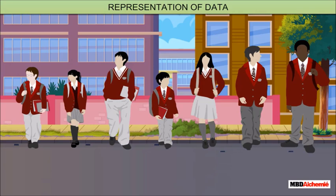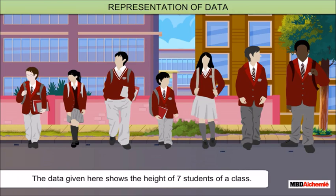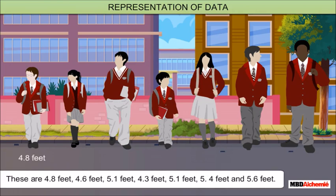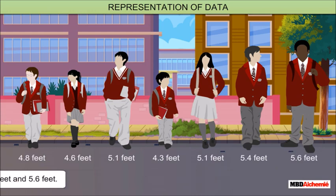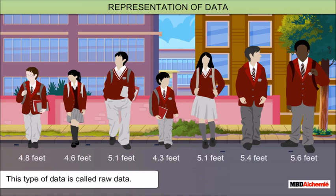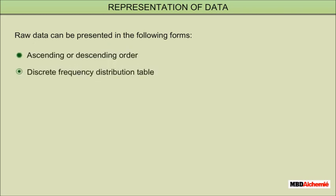Representation of data: the data given here shows the height of seven students of a class — 4.8 feet, 4.6 feet, 5.1 feet, 4.3 feet, 5.1 feet, 5.4 feet, and 5.6 feet. This data has no proper arrangement; this type of data is called raw data. Raw data can be presented in the following forms: ascending or descending order, discrete frequency distribution table, or grouped frequency distribution table.